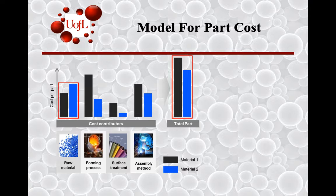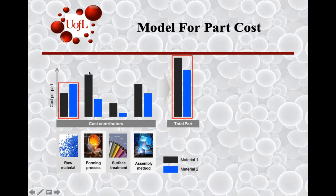The final contributors to part cost include surface treatment and assembly. Based on manufacturing constraints, are we assembling multiple components into the final part, or can we reduce the number of components in the assembly? Then there's surface treatment — is it the color we want, the surface finish we want, and is there any post-processing related to that?